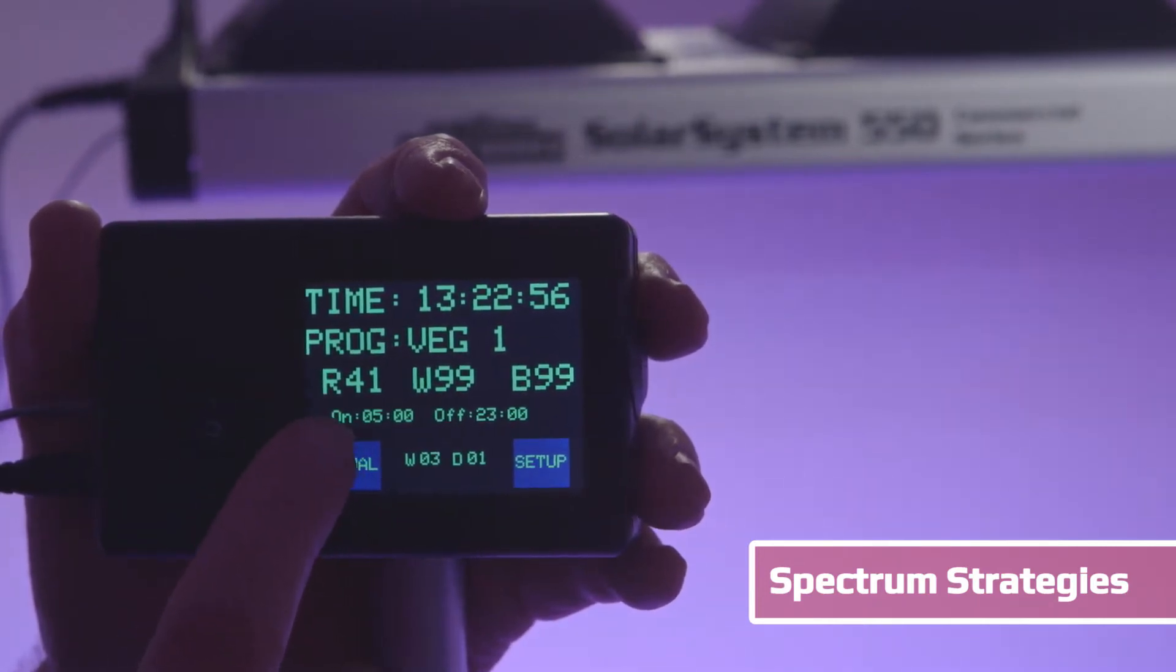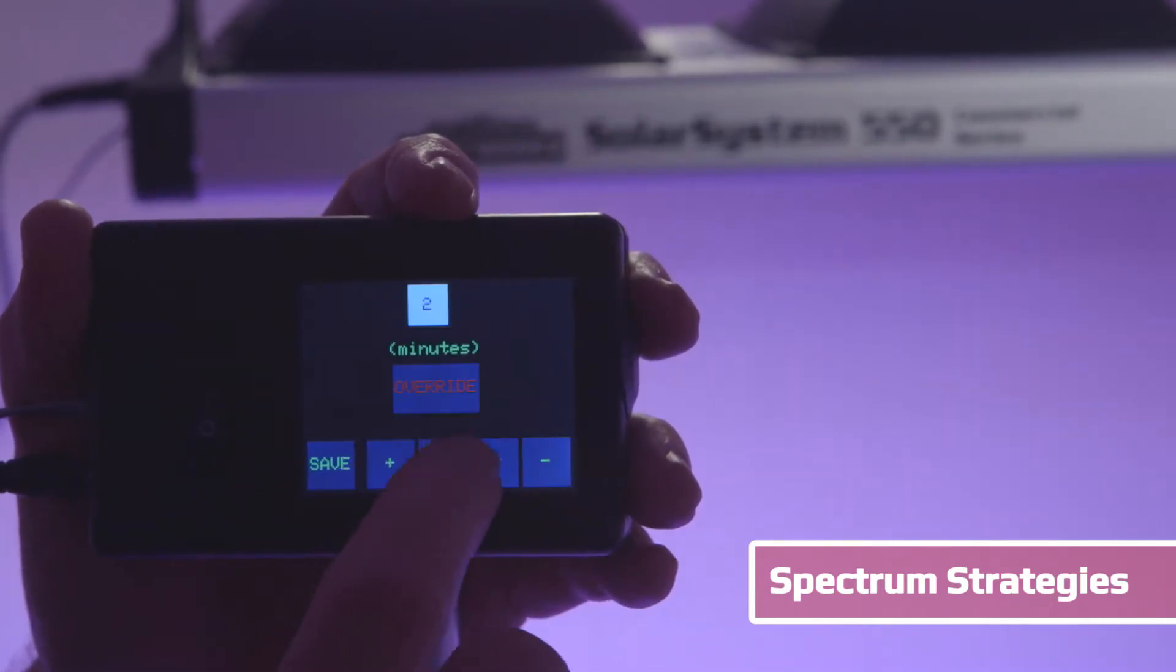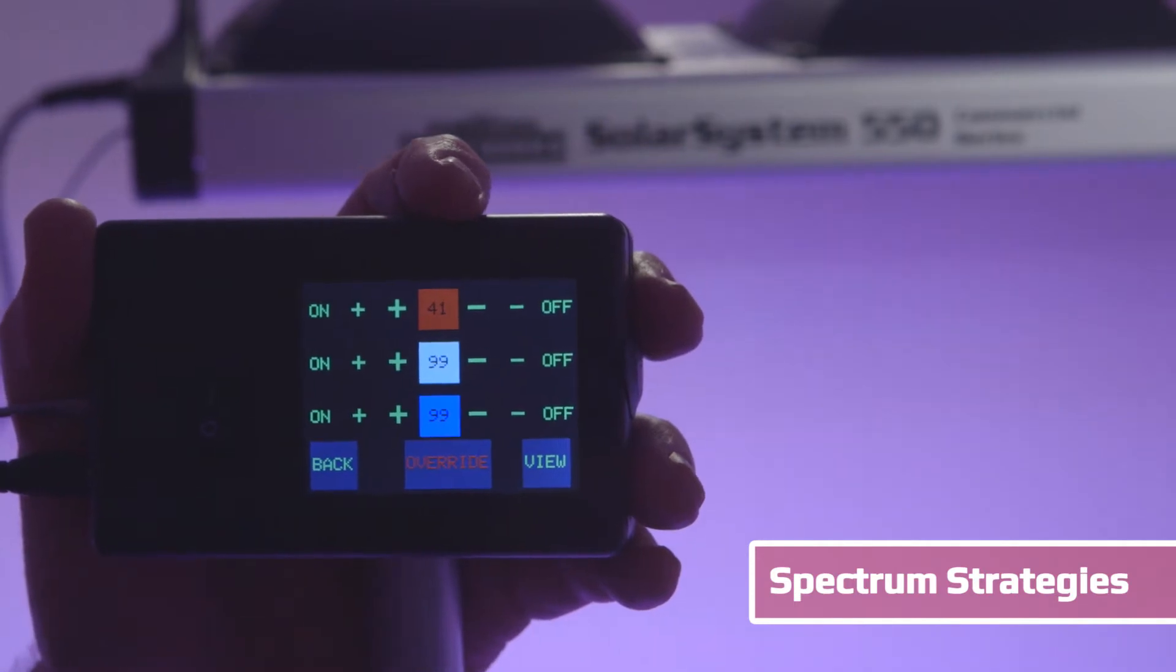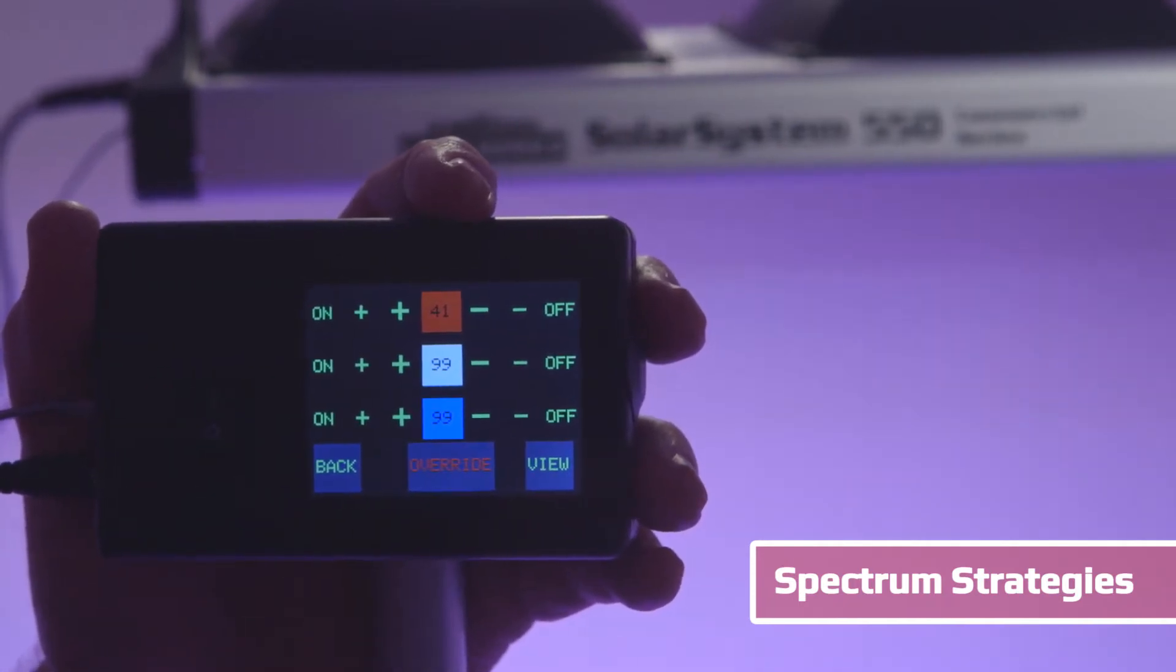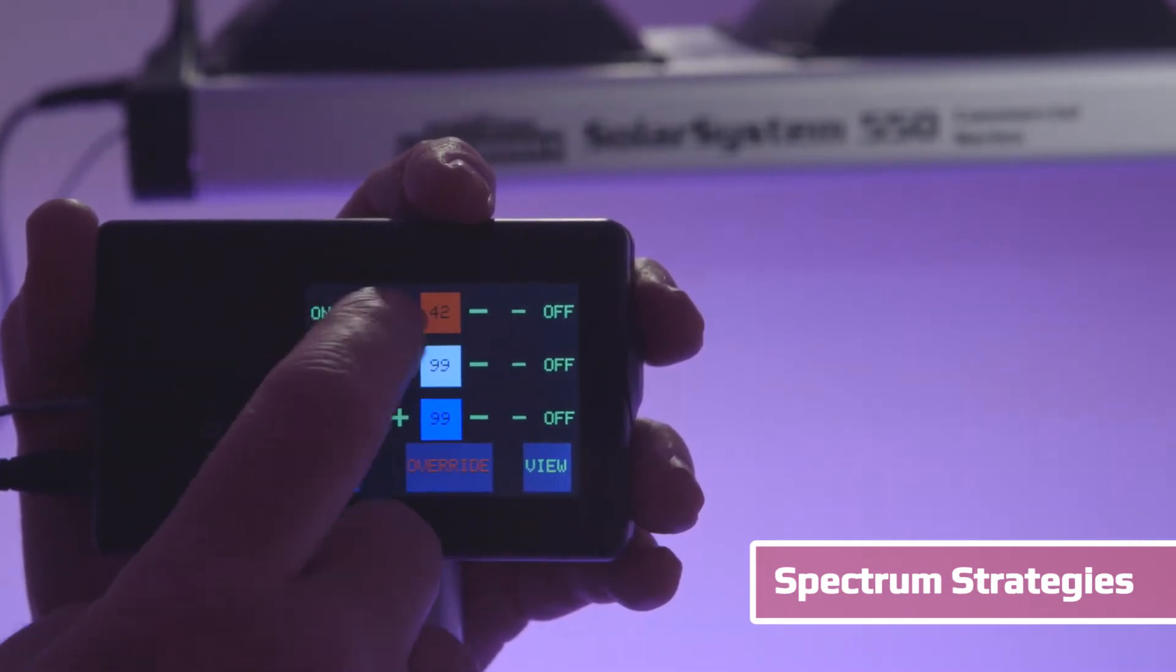First, let's go to manual override. Now I'm in total manual mode. There's an important difference between the ratio of red to blue light.